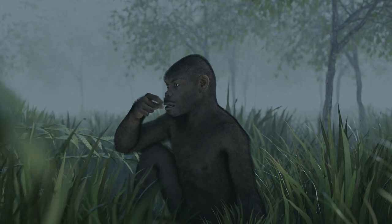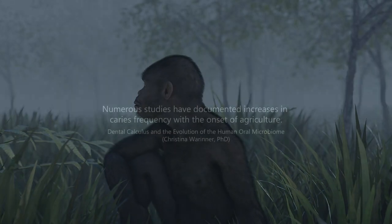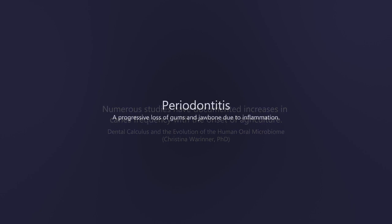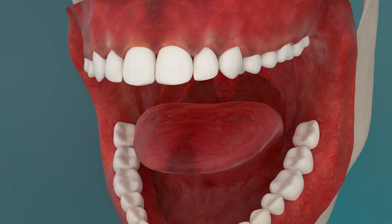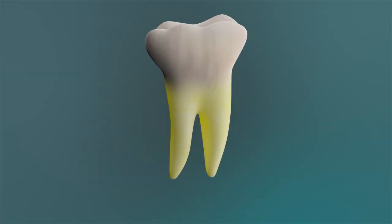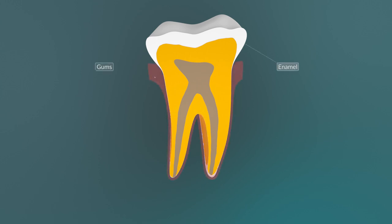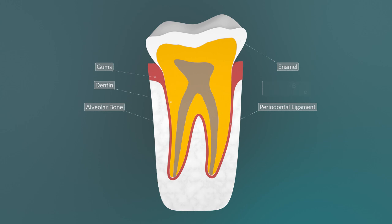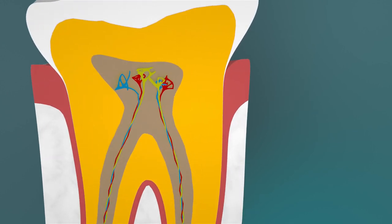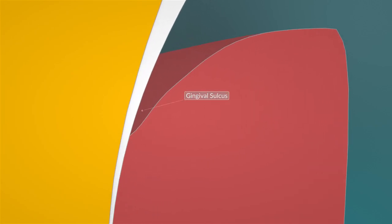We'll see in a moment how we can effectively prevent tooth decay today. But first, let's take a look at periodontitis. Periodontitis is an inflammation of the periodontium, which includes the gums and the jawbone. At first, injuries occur in some places, usually in the gingival sulcus, and this leads to inflammation.